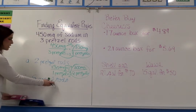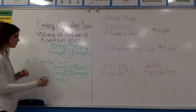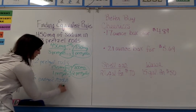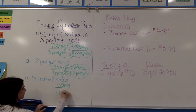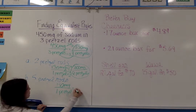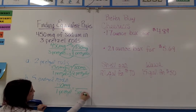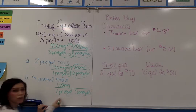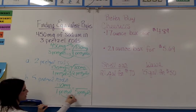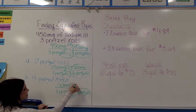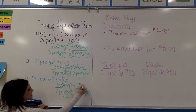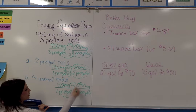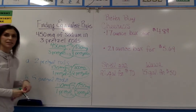To find the amount of sodium in five pretzel rods, I'll once again use the unit rate: 150 milligrams in one pretzel. I want to find out how many milligrams are in five pretzels. So one times five is five, and I also have to multiply the numerator by five. 150 times five is 750, so there are 750 milligrams in five pretzels. When doing rates and unit rates, you must include the unit.